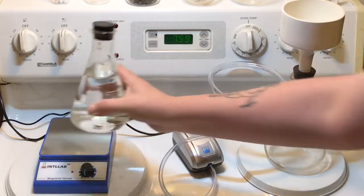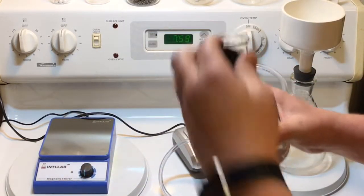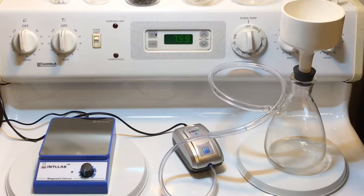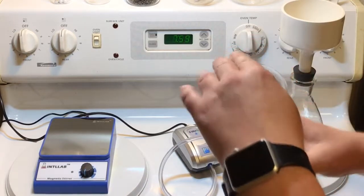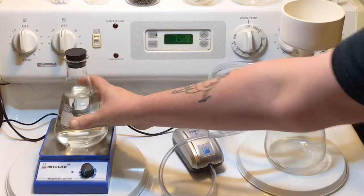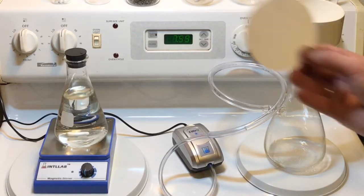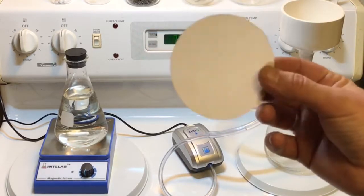Before we actually add any of our flowers, before we add our lavender flowers to our witch hazel, we want to just get that filter in here a little bit wet. That will keep a good seal on our filter. The filters that come with the flask are just like a coffee filter but a little bit thicker.